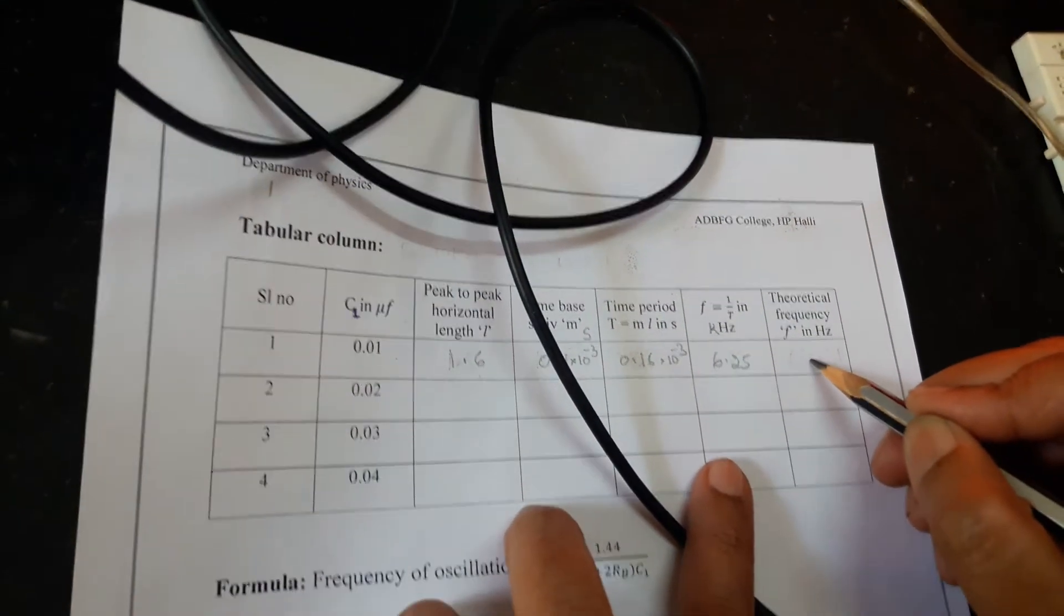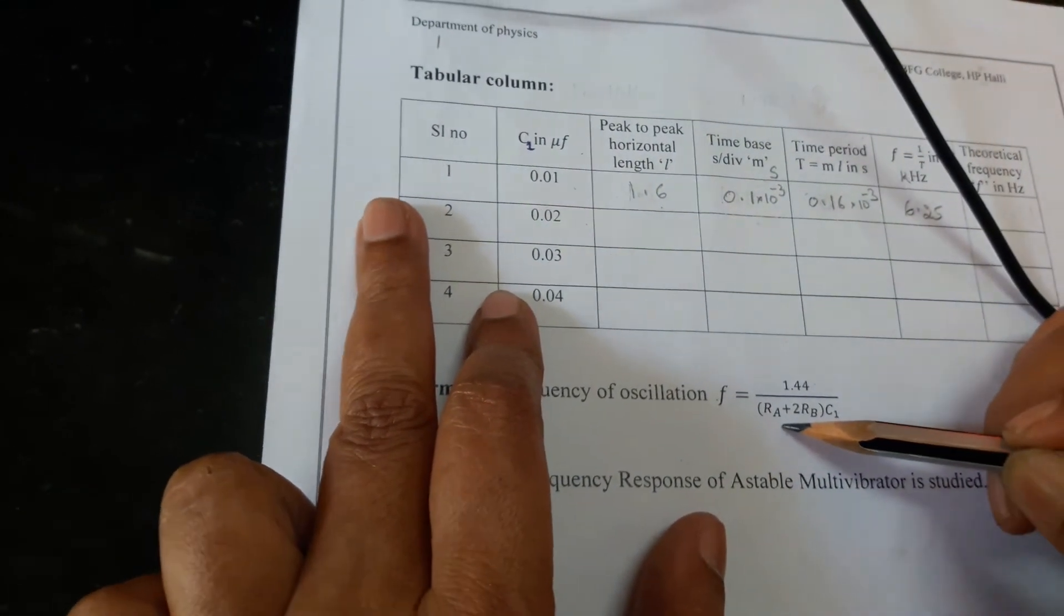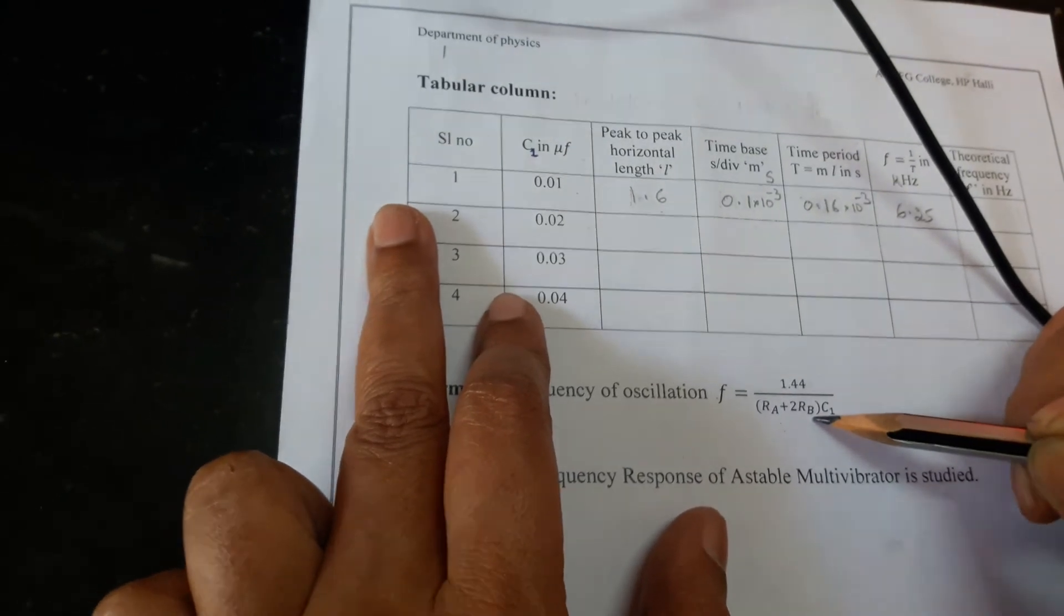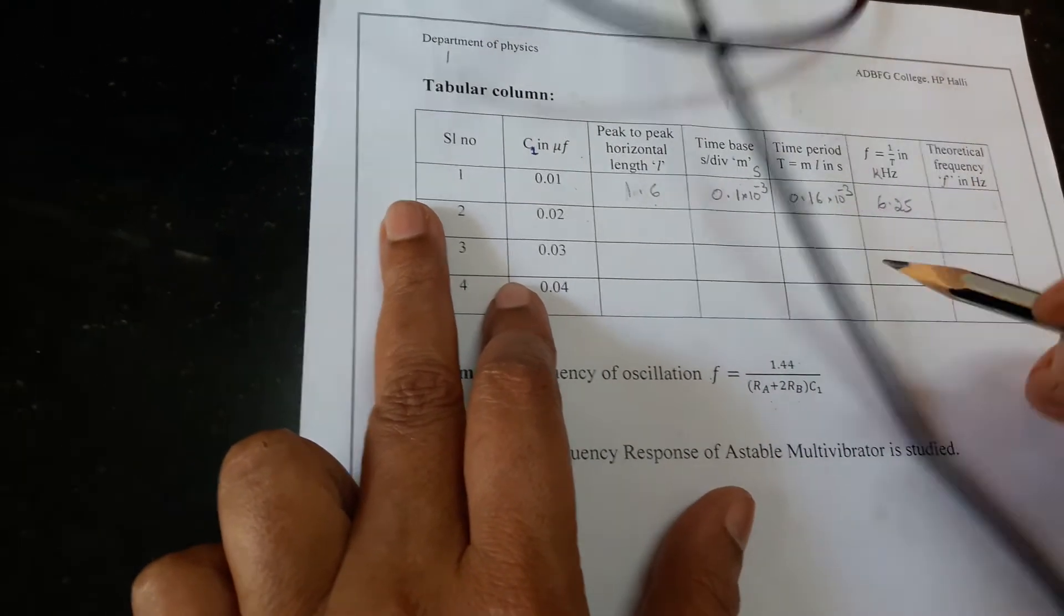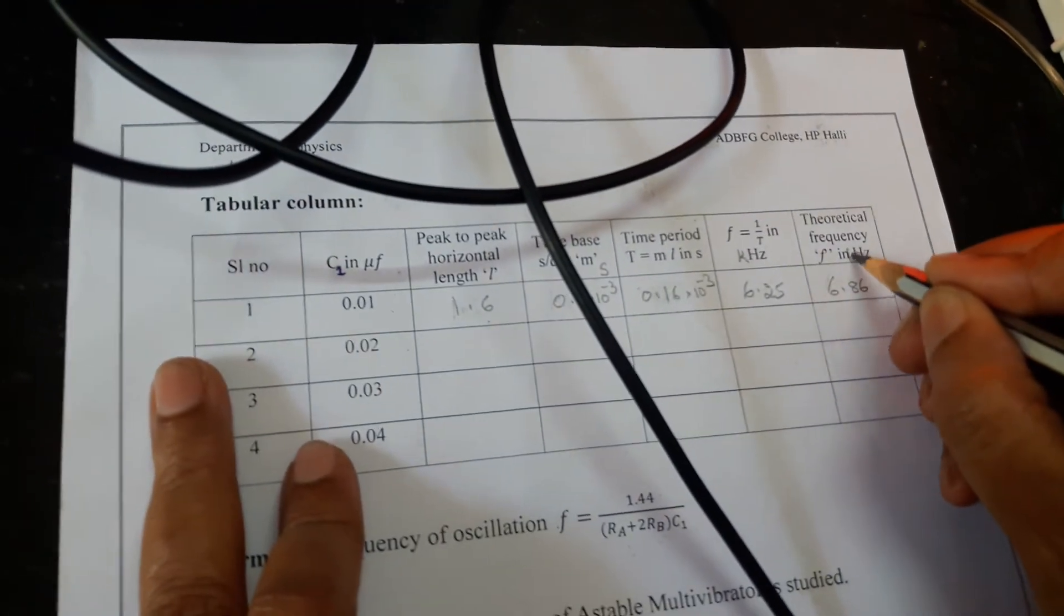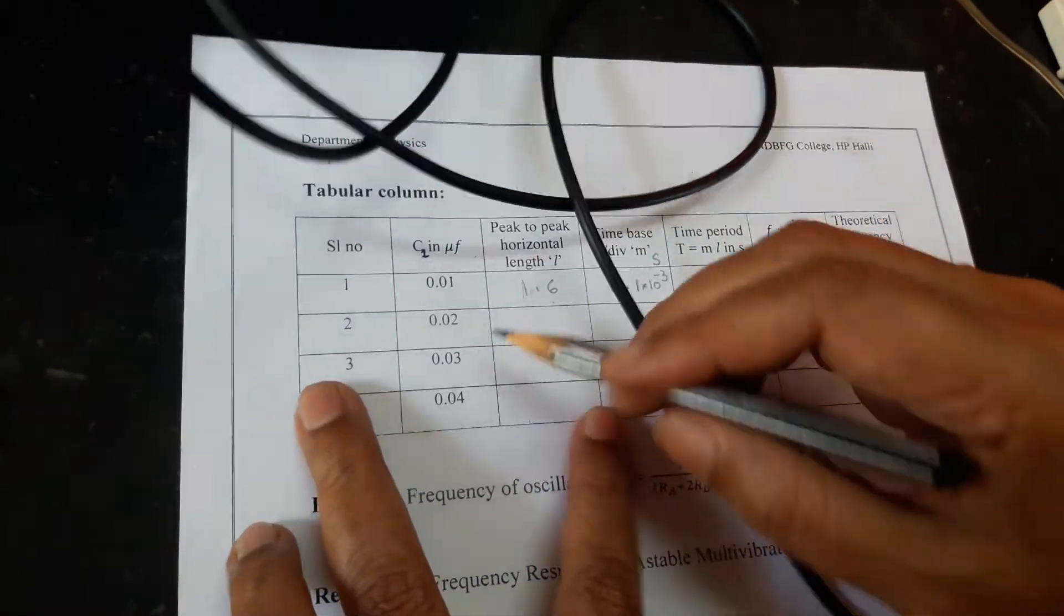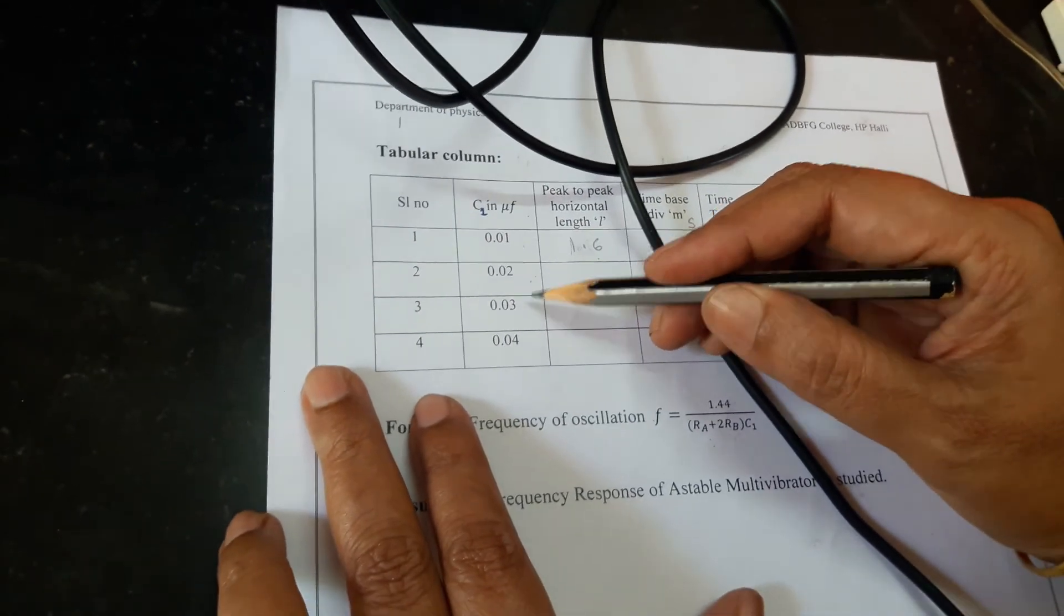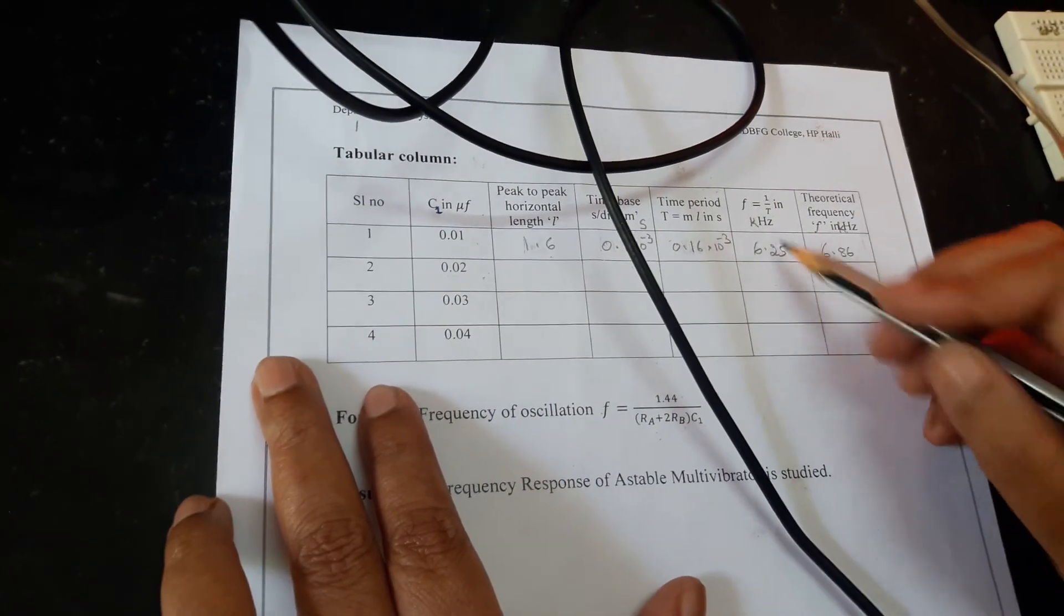Theoretically, we have to calculate the frequency of the waveform using the formula 1.44 divided by Ra plus twice of Rb into C1. Ra is 1 kilo ohm, Rb is 10 kilo ohms and C1 is 0.01 microfarad. Substitute all the values in this one, we will get this value as 6.86 kilohertz. So, these two must be comparable.